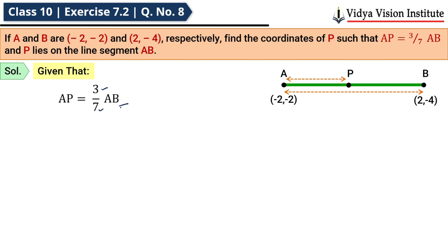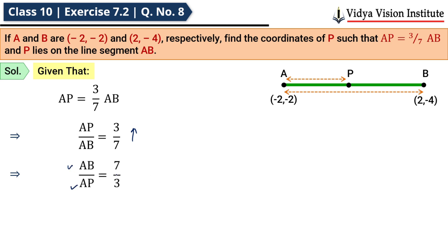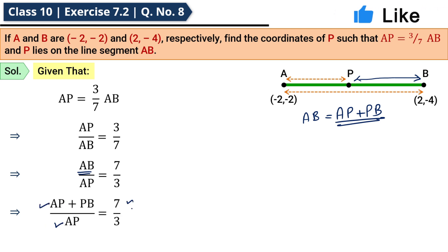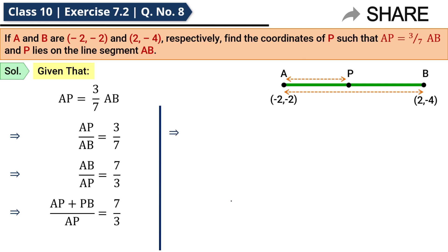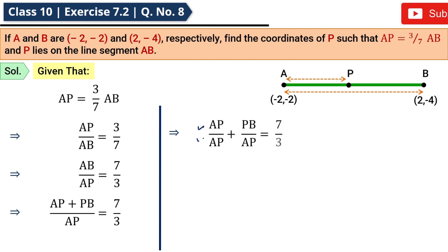Given that AP = (3/7) AB, therefore AP upon AB = 3/7. Inverting this ratio: AB upon AP = 7/3. Now, AB = AP + PB, so substituting: (AP + PB) upon AP = 7/3. Separating the terms: AP/AP + PB/AP = 7/3.